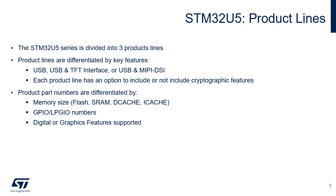Product part numbers are differentiated by memory size of flash, SRAM, dcache and iCache, number of GPIO supported, and digital or graphics features supported.